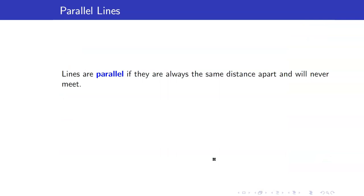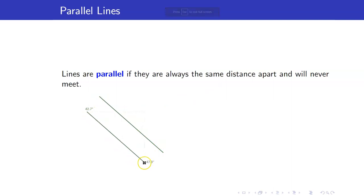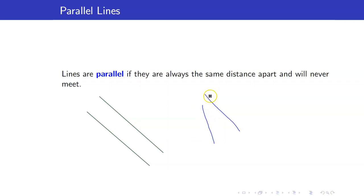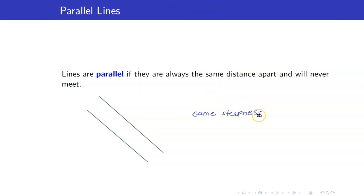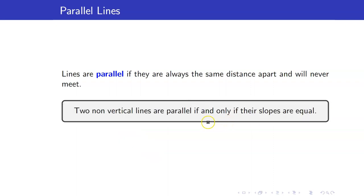When are two lines parallel? Two lines are parallel if they are always the same distance apart and will never meet — no matter how you extend them, they will never intersect. If two lines are parallel, they must have the same steepness, because if one line is steeper than the other, eventually they will intersect. So two non-vertical lines are parallel if and only if their slopes are equal.